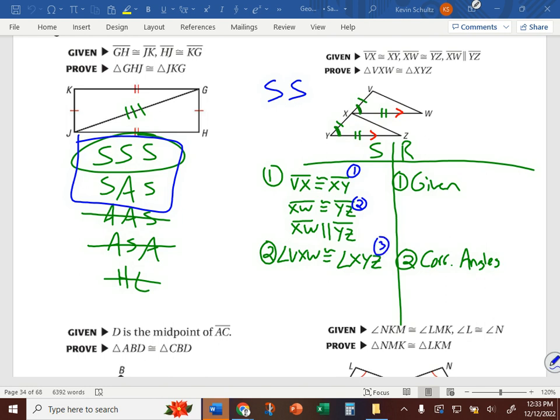So step two, we can say that angle VXW is congruent to angle XYZ, because of corresponding angles. Rarely are you ever given something that you're not going to use. So that third given section here where it says those two parallel lines, you're probably going to be using that. So then you have to look at, okay, why would they give me parallel lines? What do I know about parallel lines? Oh, corresponding, alternate interior, alternate exterior, all those different things.